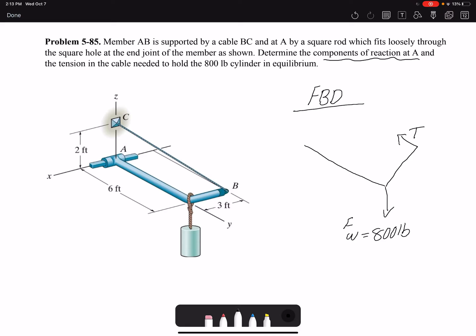So if I look at the problem I can see that this square bar can move along X but the motion is restricted in Y and Z. So I do not have any reaction force in X but I have reaction forces in Y and Z. So I have AZ and AY.